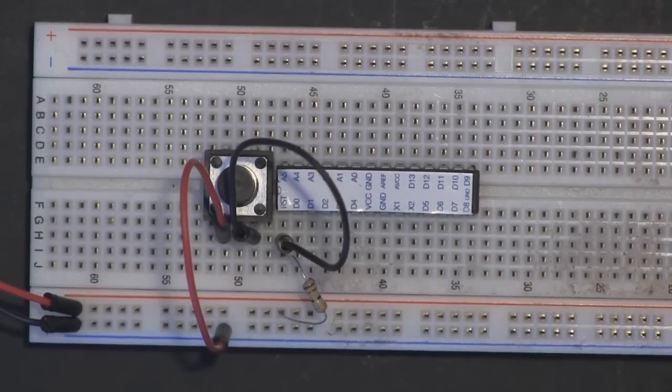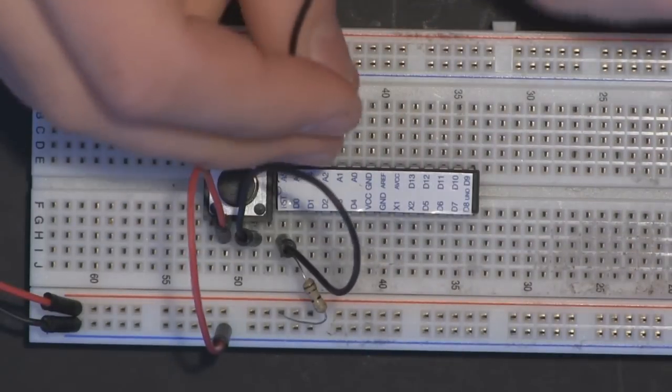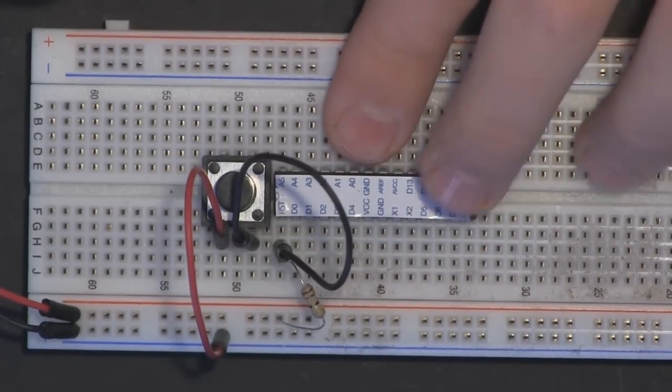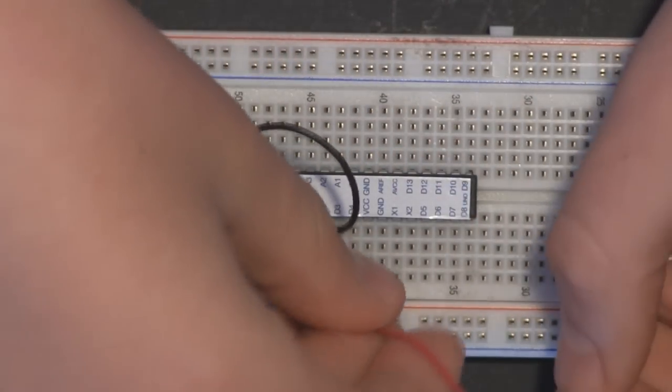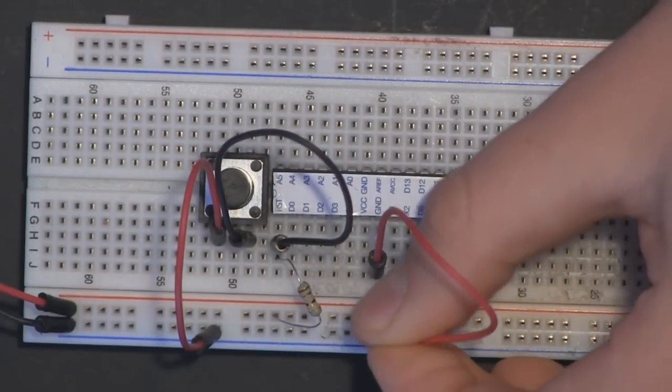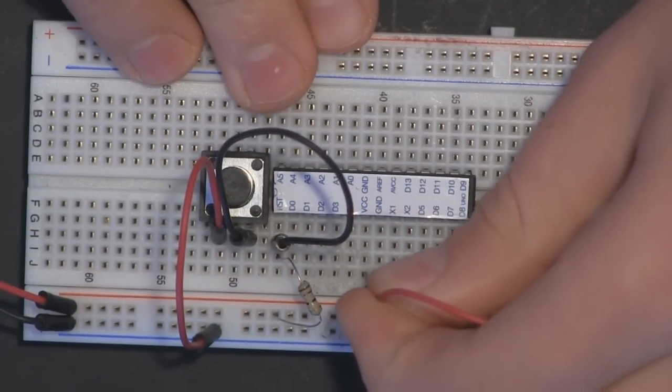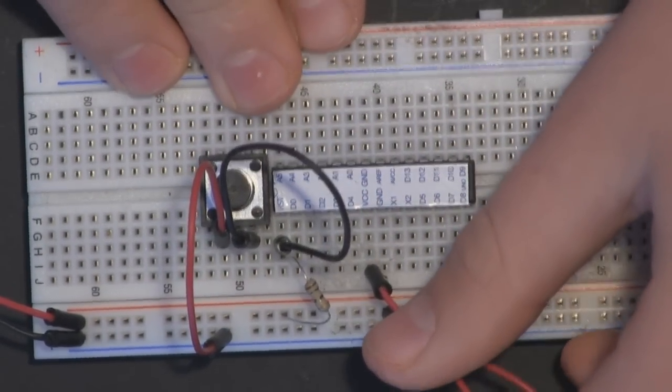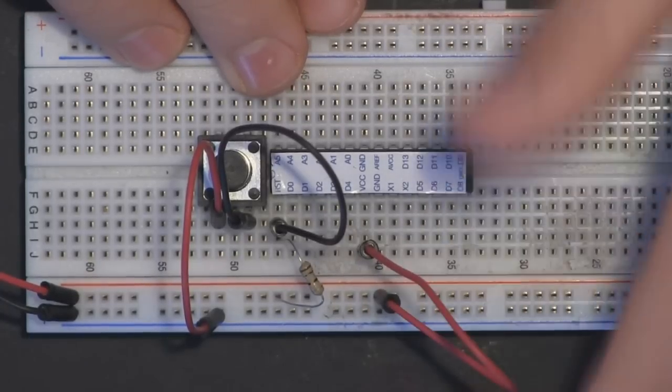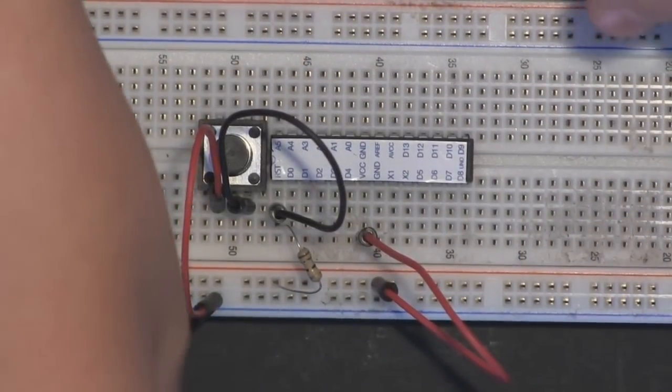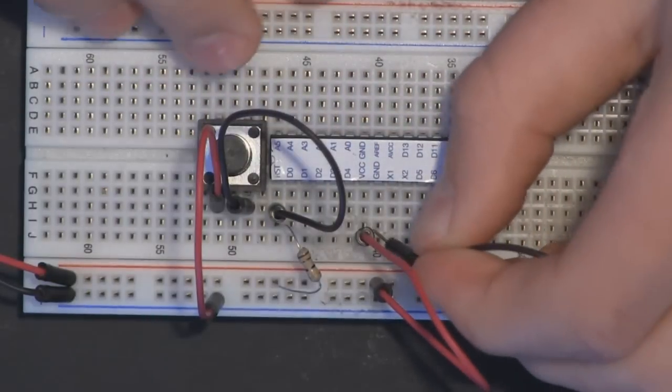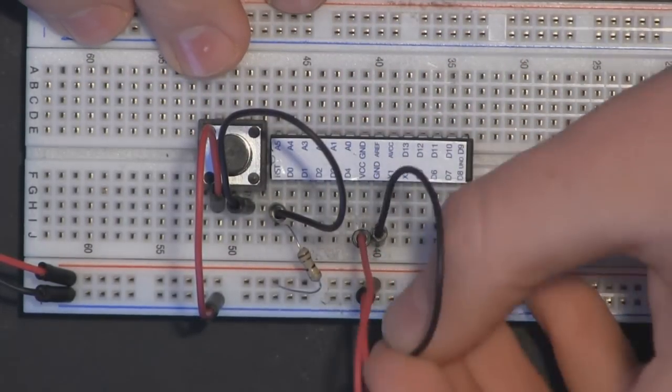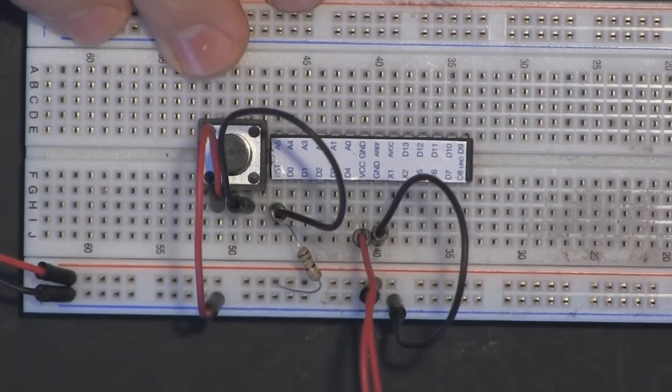And now we're going to add some power and ground rails to the chip. Let's connect pin 7 right here to the power rail. And then we want to connect pin 8 to ground just like that.